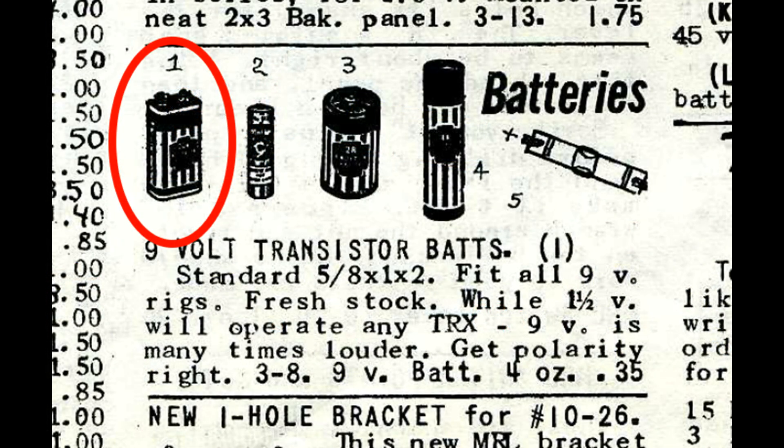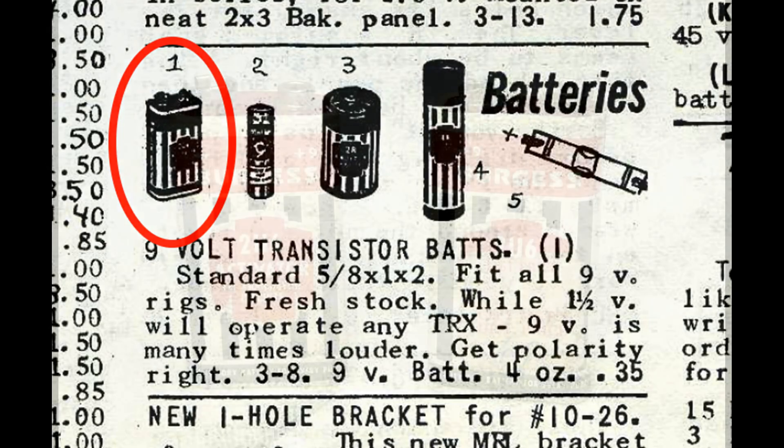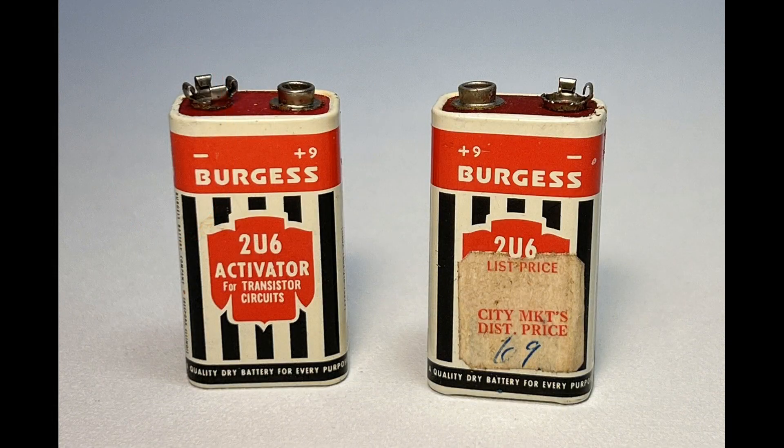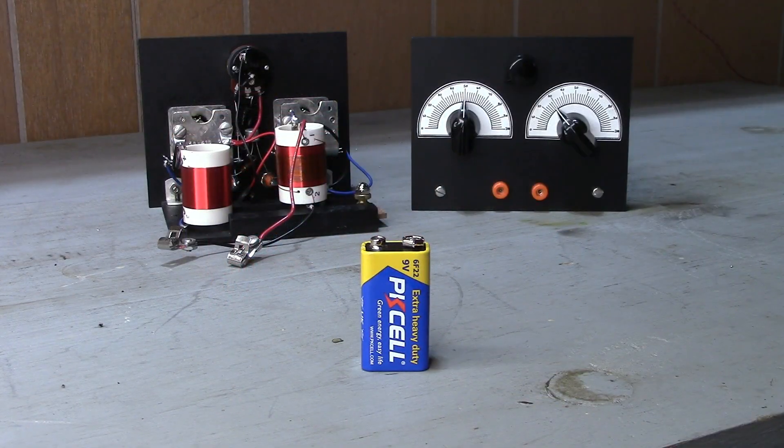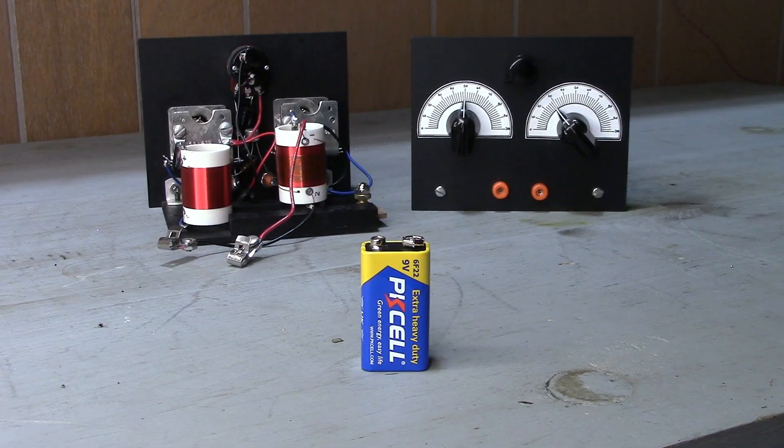Now it's time to test the radio, but first we need a 9-volt battery. Elmer Osterhout and Modern Radio Laboratories sold Burgess brand batteries. So we're going to need a Burgess battery to make the radio work. This is what a vintage Burgess 9-volt battery looks like. I ain't even putting no modern looking battery in this here radio.